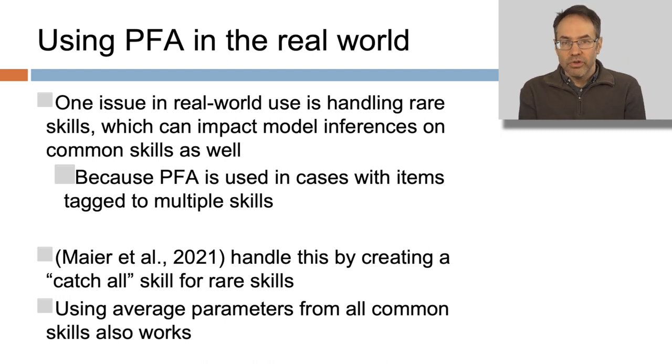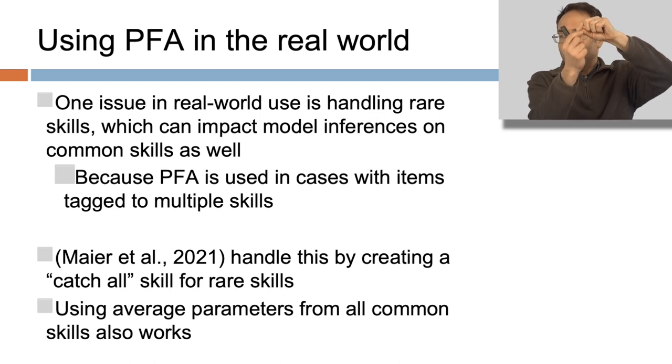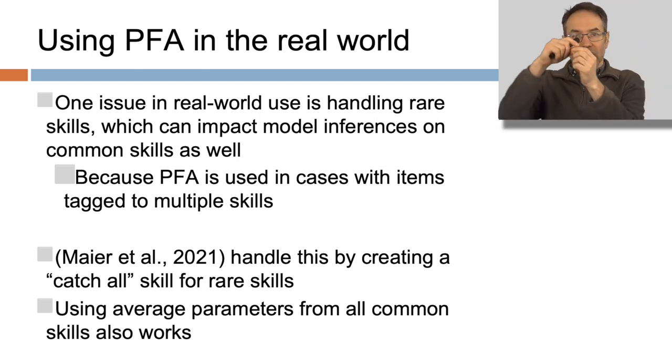One issue in the real-world use of PFA is how it handles rare skills, which can impact model inferences on common skills as well, because PFA is typically used in cases with items tagged to multiple skills. A rare skill is going to impact the common skills it intersects with. Meyer et al. handled this by creating a catch-all skill for rare skills, and they found that using average parameters from all the common skills also works.